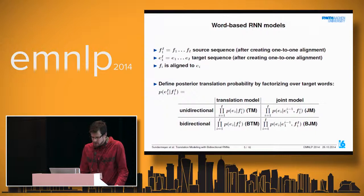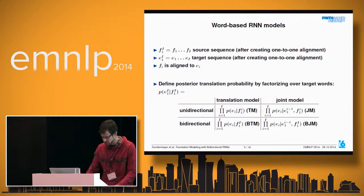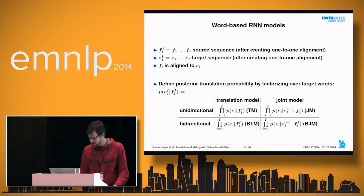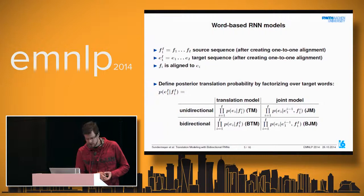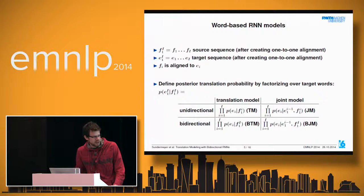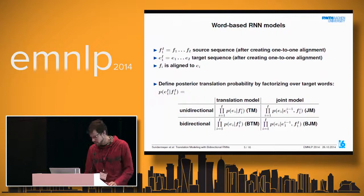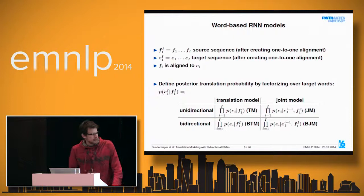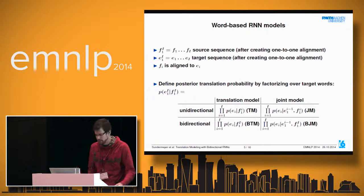Once we have the one-to-one aligned sequence, we define our translation models by factorizing over target words. The correct factorization conditions the probability on the full source sentence and the complete target history. We can then simplify by making independence assumptions: dropping dependence on target history gives a translation model rather than a joint model—where joint means a joint translation and language model. Assuming independence on future source information gives a unidirectional rather than bidirectional model. Combining both gives the simplest unidirectional translation model.